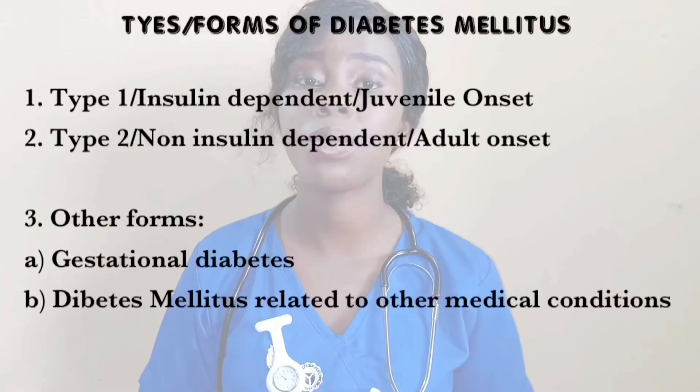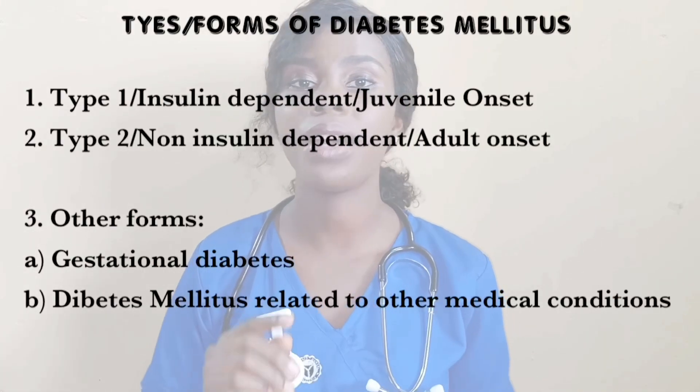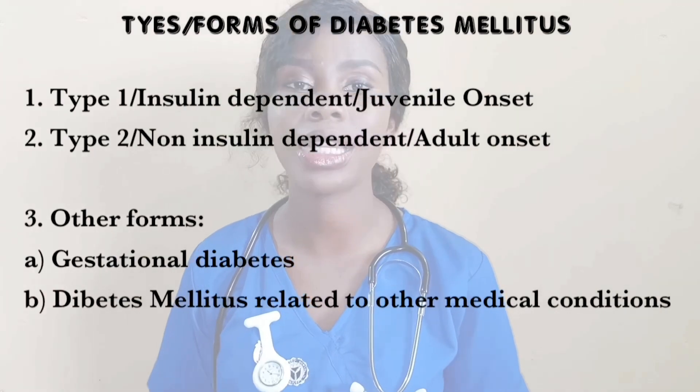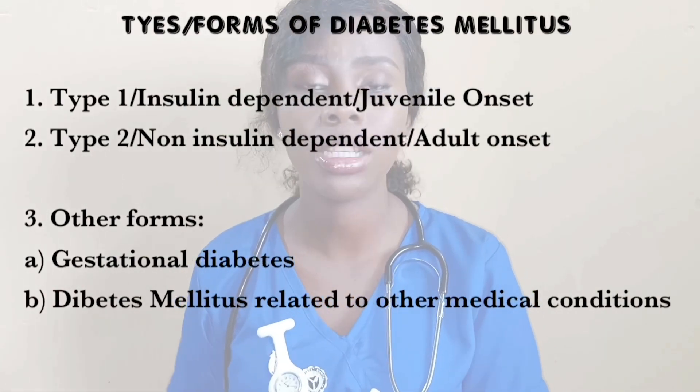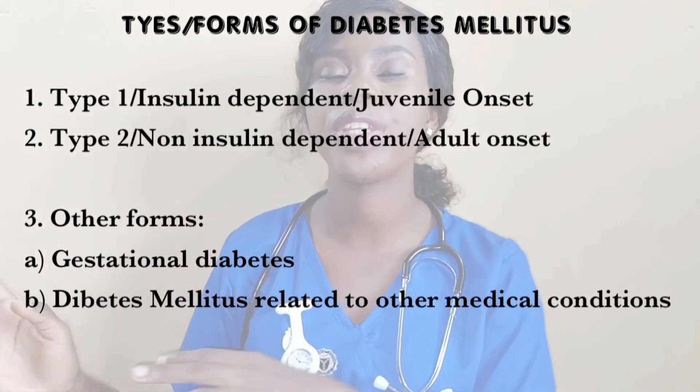Now that we understand what diabetes is, what exactly is the cause of diabetes? To first understand what causes diabetes, it is important to understand the types of diabetes. For diabetes, you have the insulin-dependent, which is also known as type 1. You have type 2, known as non-insulin-dependent diabetes. And you have other types like gestational diabetes and diabetes related to medical conditions. Type 1 and type 2 share a common word — insulin.